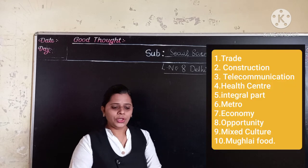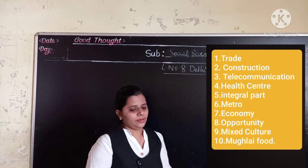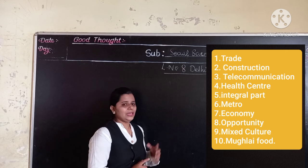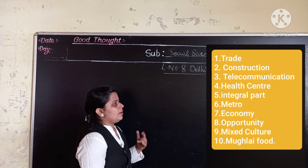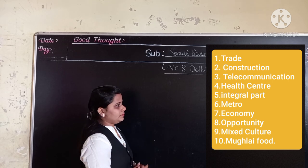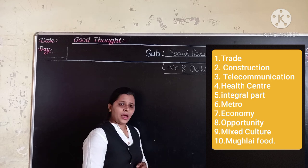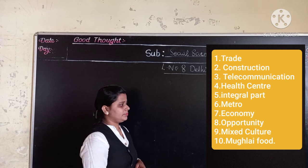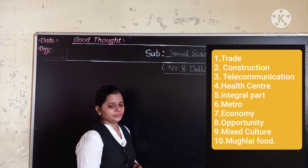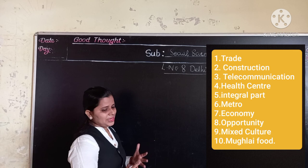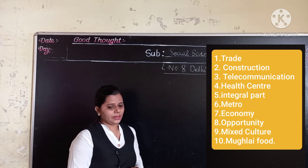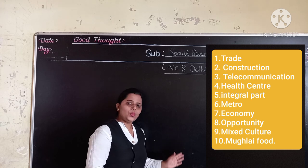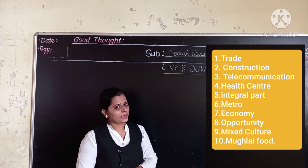Now take your new words. First: trade. Second: construction. Third: telecommunication. Fourth: health center. Fifth: integral part. Sixth: metro. Seven: economy. Eighth: opportunity. Nine: mixed culture. And ten: mobilizer. So these are all your new words which you have to copy down in your notebook. Thank you.